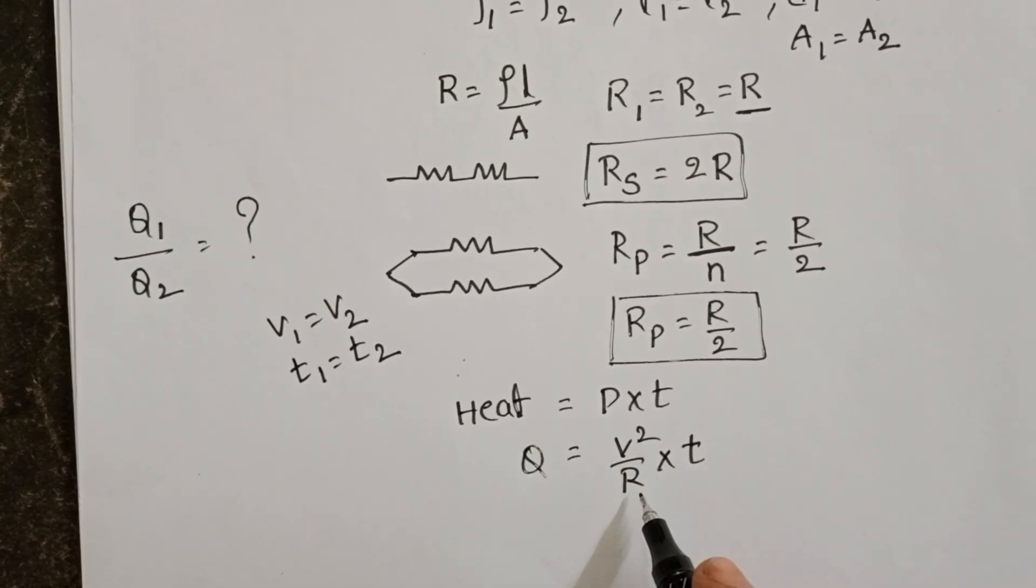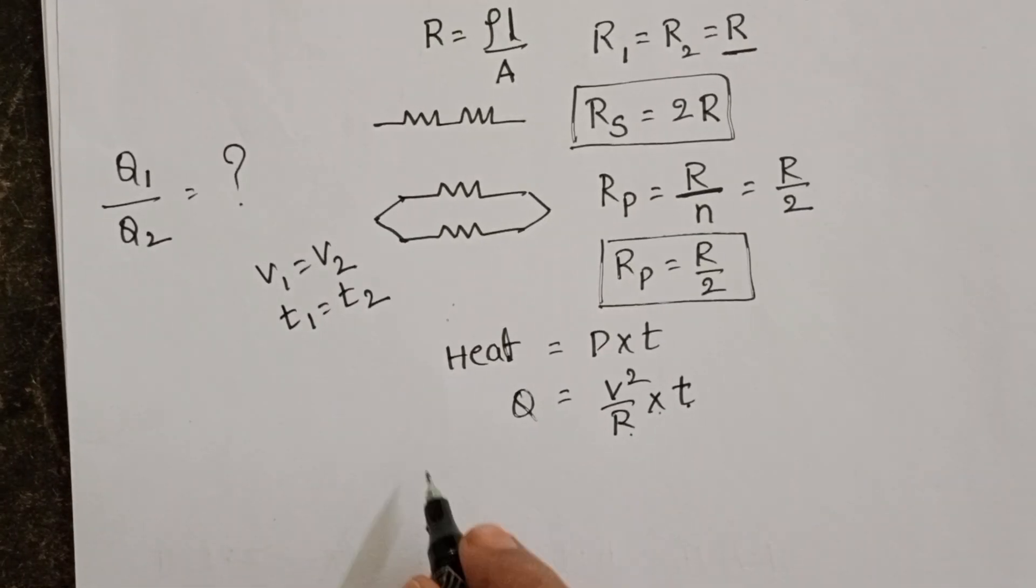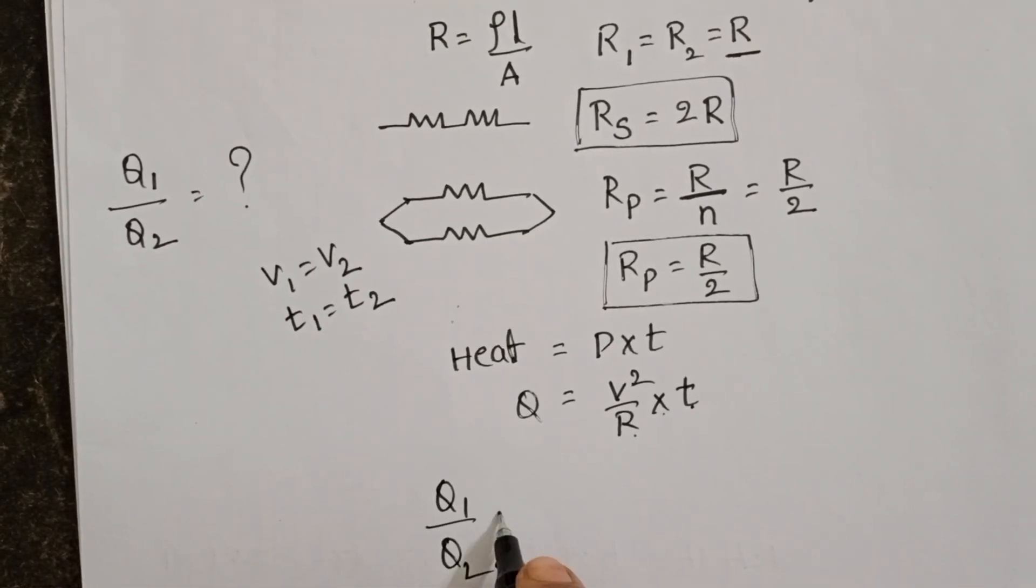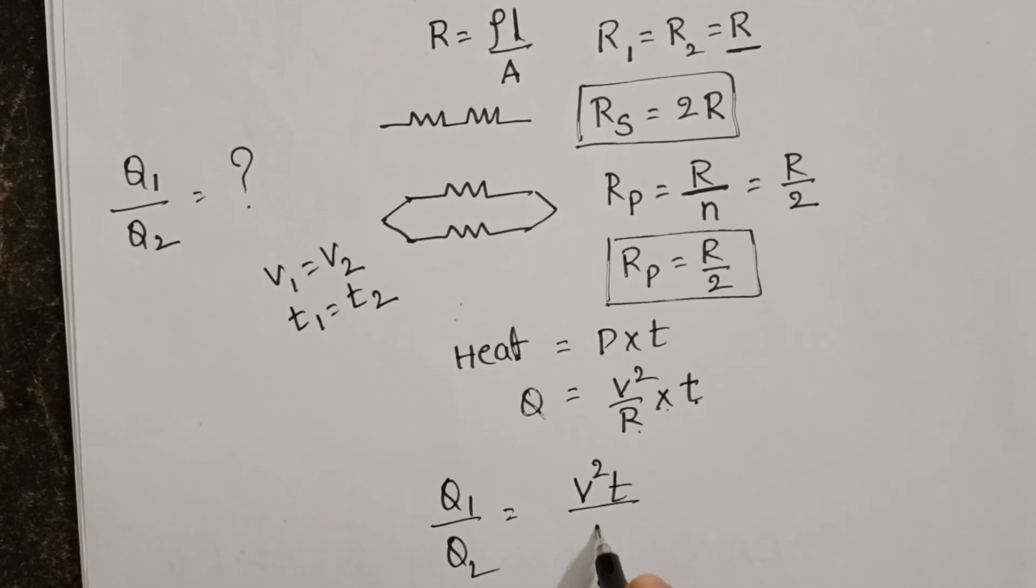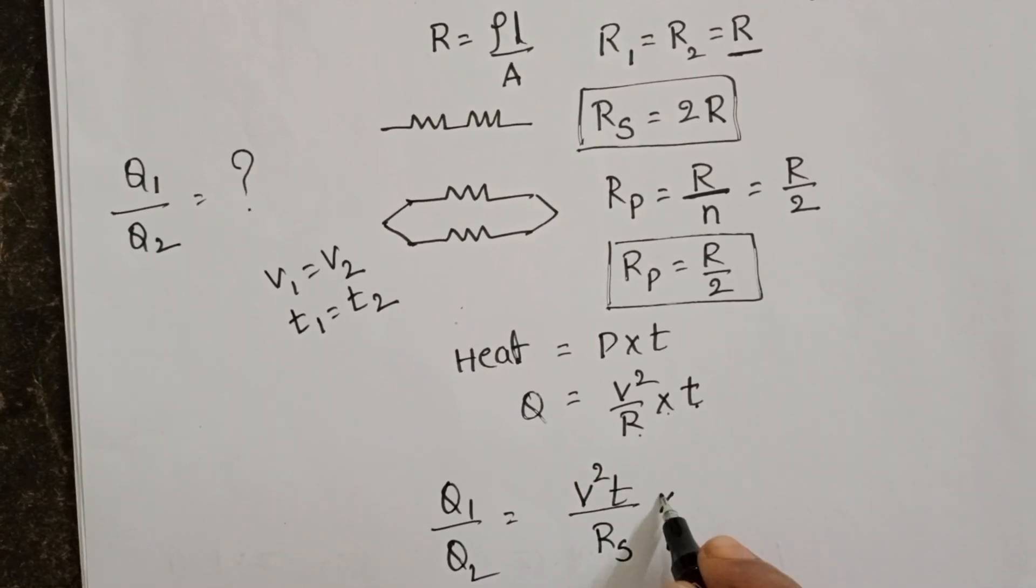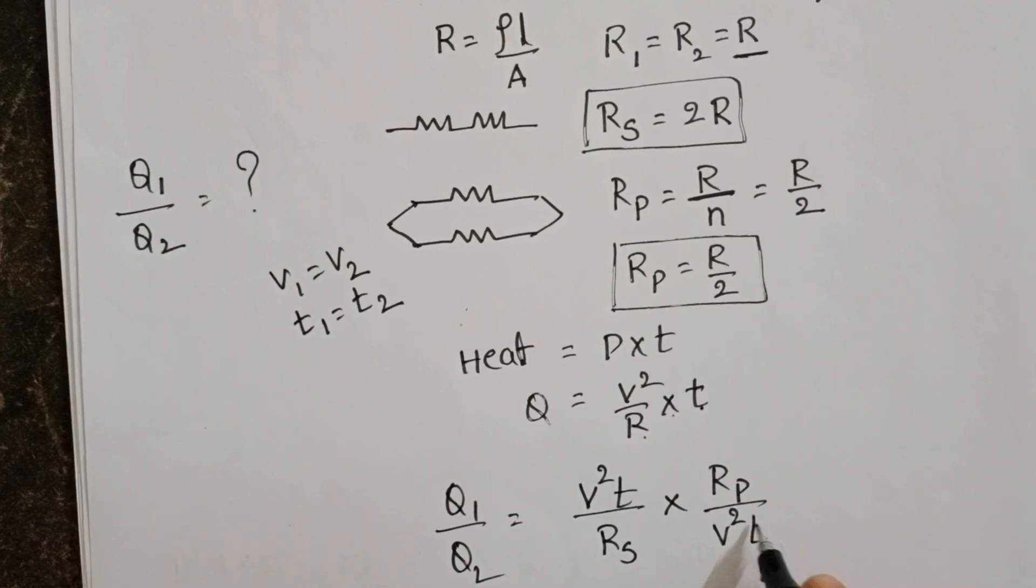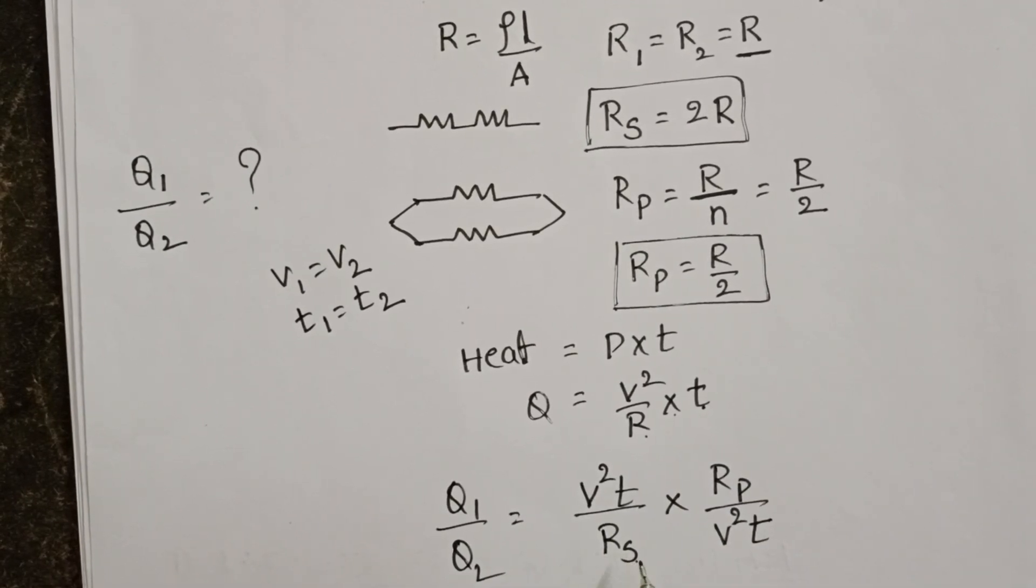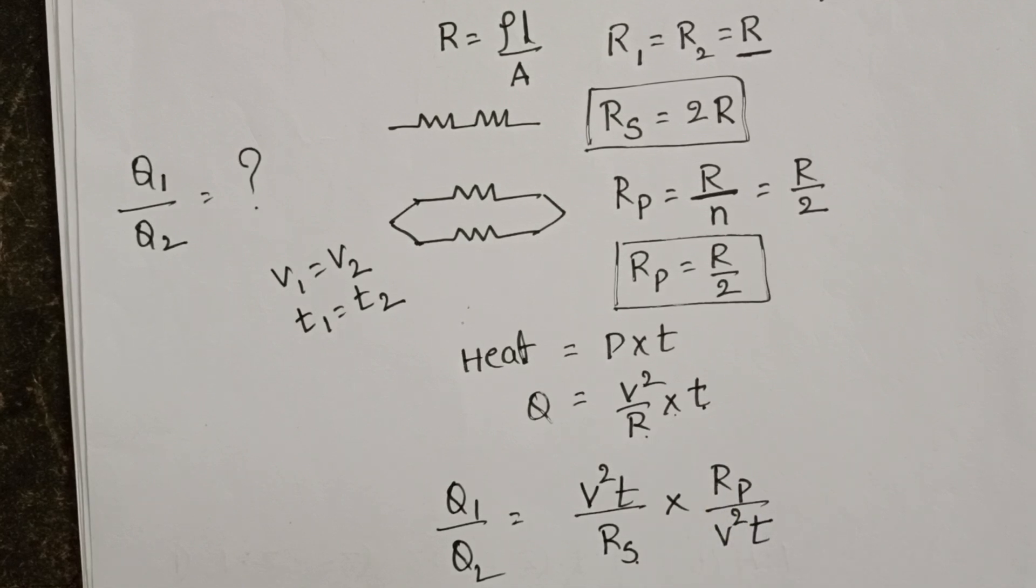Q1 by Q2 equals V square T by Rs into Rp by V square T. Where Rs is equivalent resistance in series combination and Rp is equivalent resistance in parallel combination.